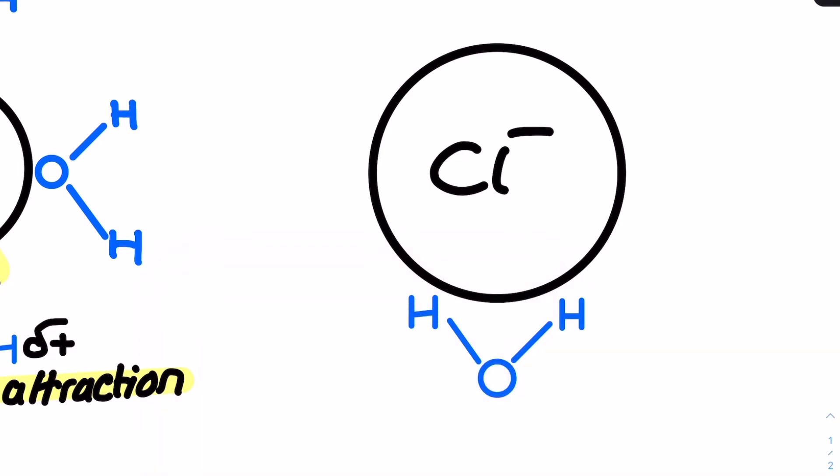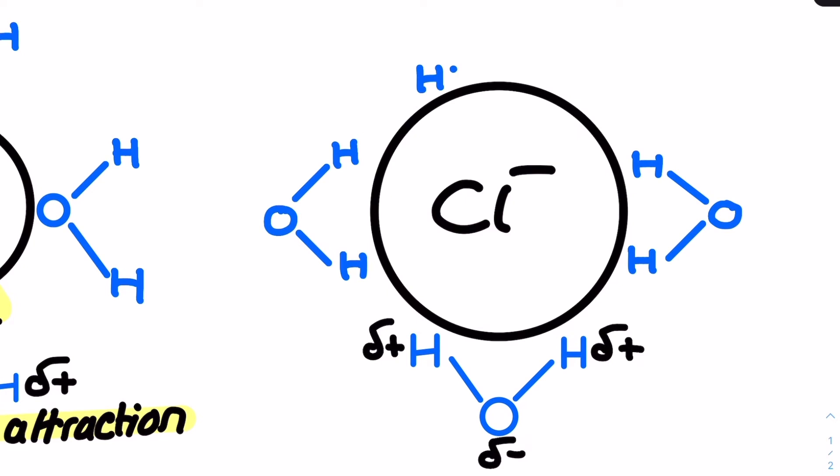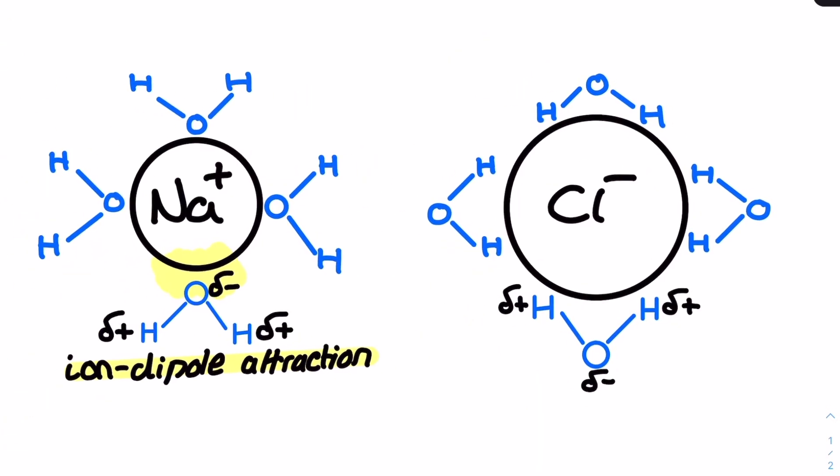For the cations like Na+, the delta minus oxygen from the water is what's attracted and for the anions like Cl- it's the delta positive hydrogens. The formation of these ion-dipole attractions releases energy hence they are always exothermic.